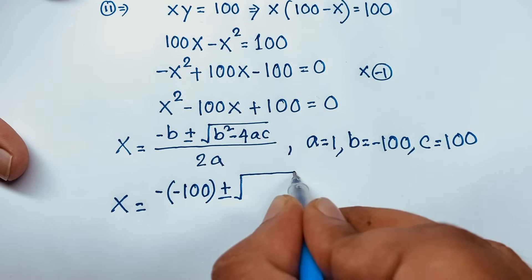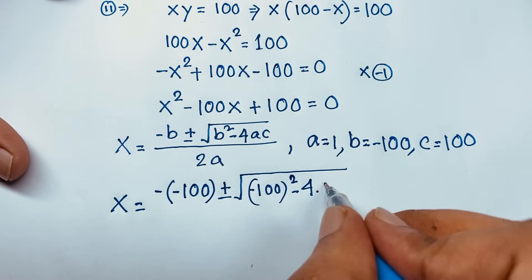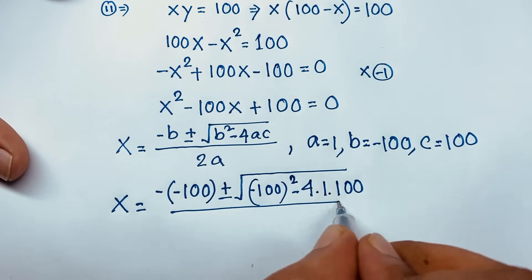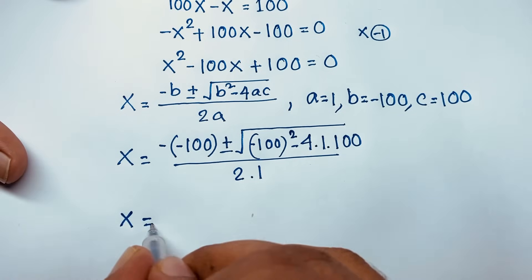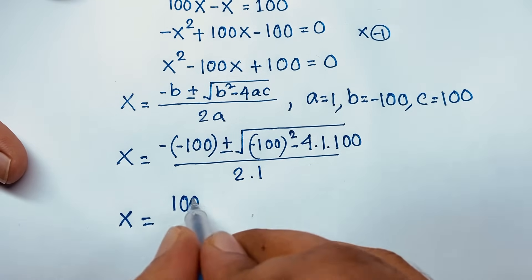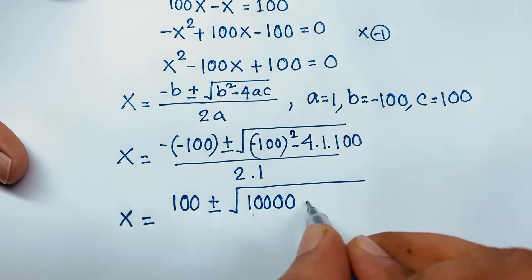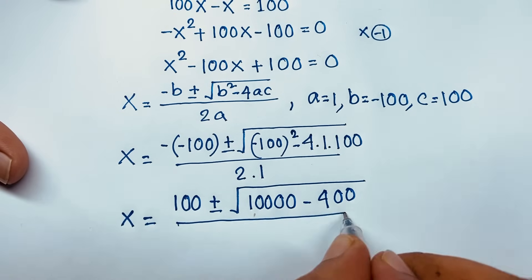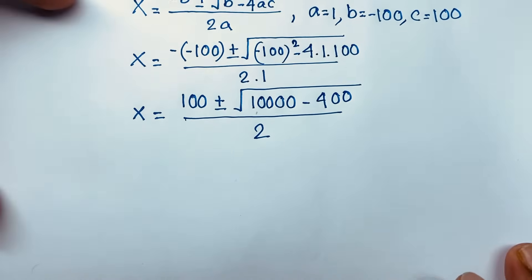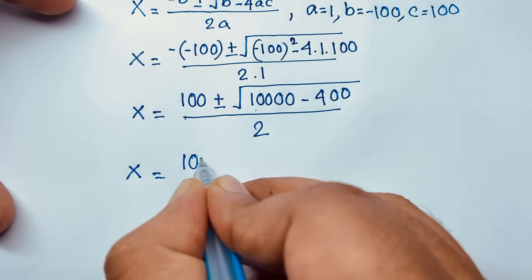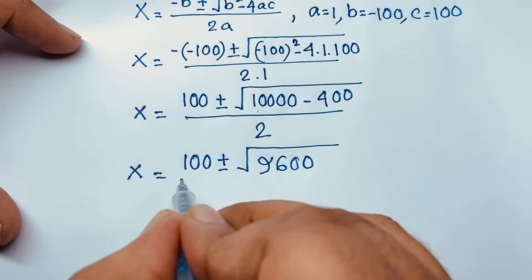So x equals negative b, where b equals negative 100, plus or minus square root of b squared — that is (negative 100) squared — minus 4 times a times c, where a is 1 and c is 100, all over 2a where a is 1. This gives x equals 100 plus or minus square root of 10,000 minus 400, which is 9,600, all over 2.